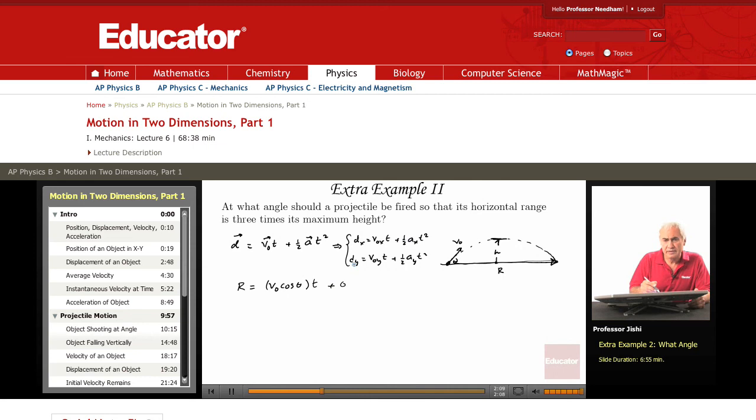DY here is 0, because going from here to there, the displacement is horizontal. There is no displacement in the Y direction. So DY is 0. That's equal to V0Y, which is V0 sine theta times T, plus half AY, which is minus 9.8, that is, minus G. So minus half G T squared.